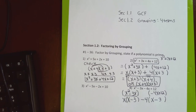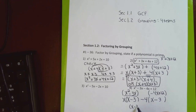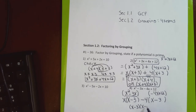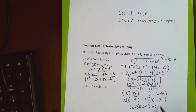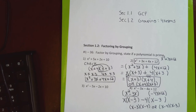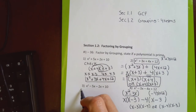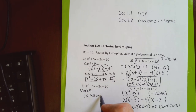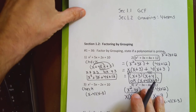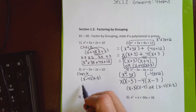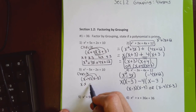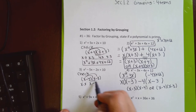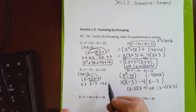Now I have my common parenthesis and x minus 4 in front. For the answer I can write the common parenthesis first followed by what's in front, or flip them — both are correct. The second version is probably better for checking. To verify, I clear the parentheses by multiplying x times x, x times negative 3, negative 4 times x, and negative 4 times negative 3.